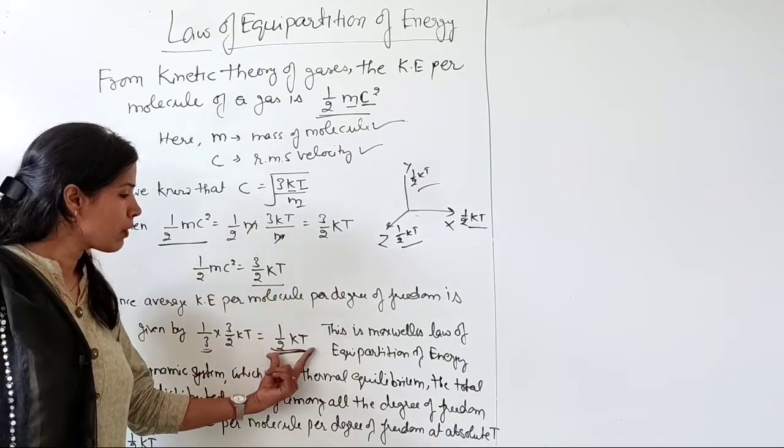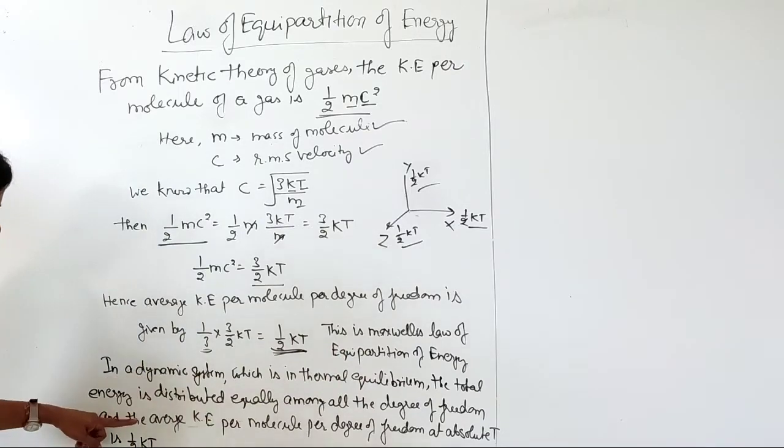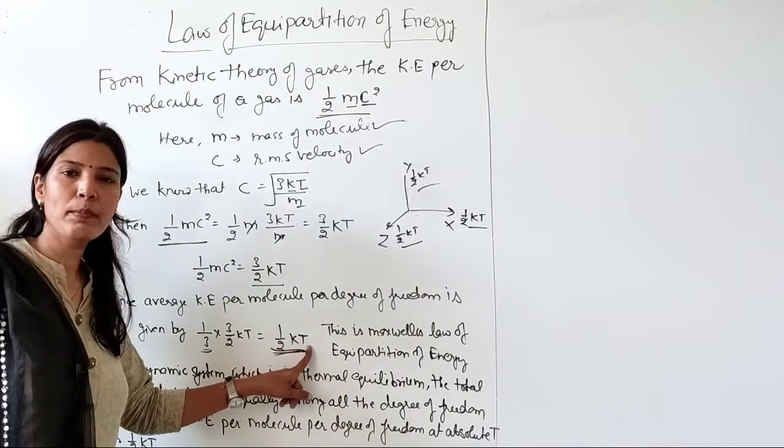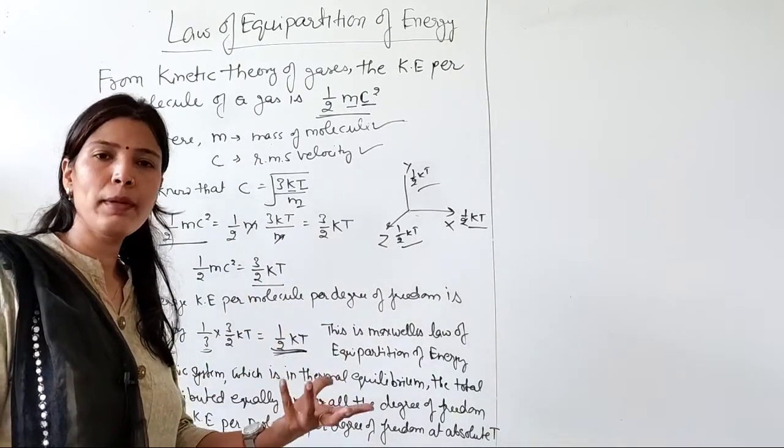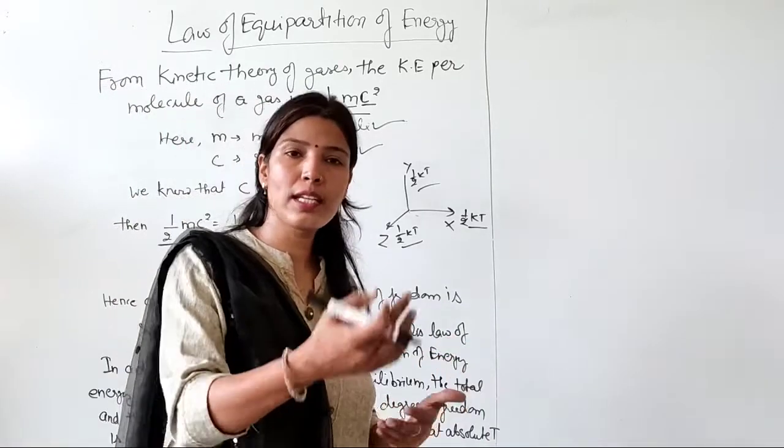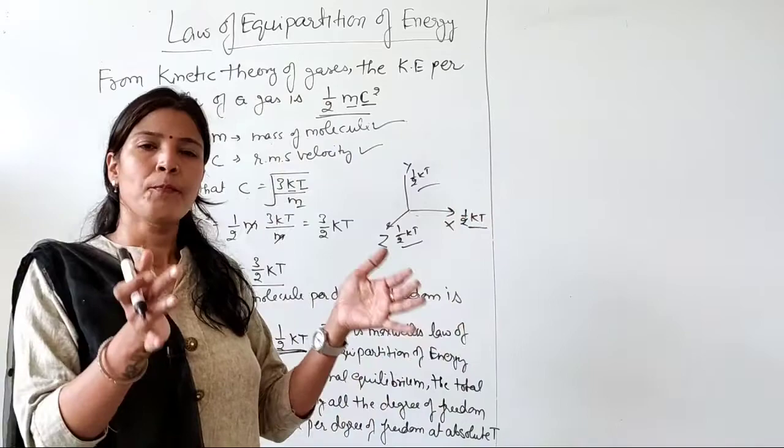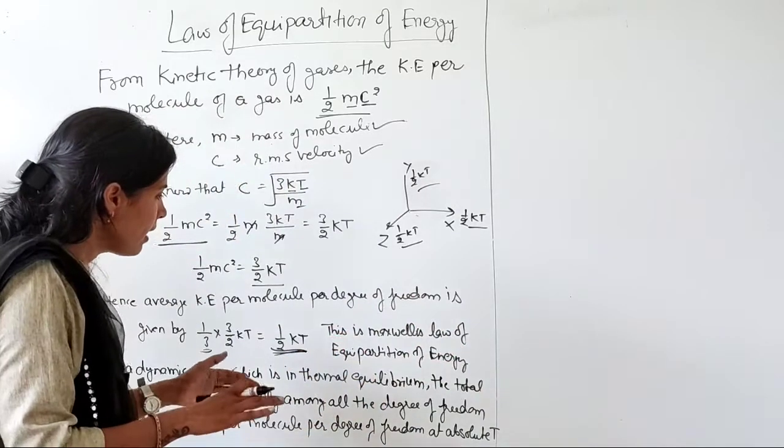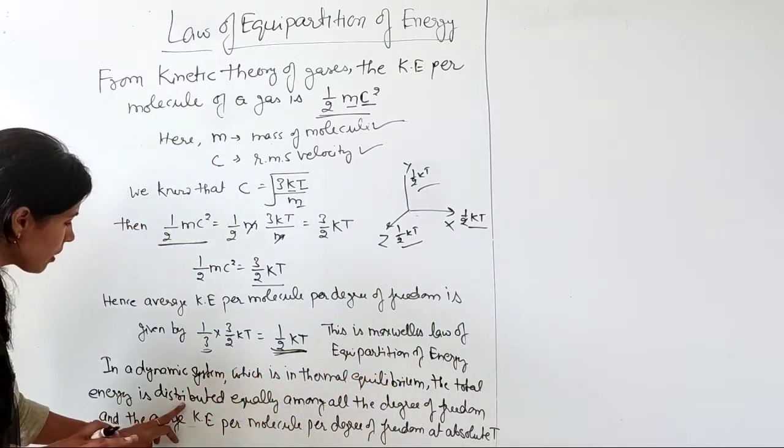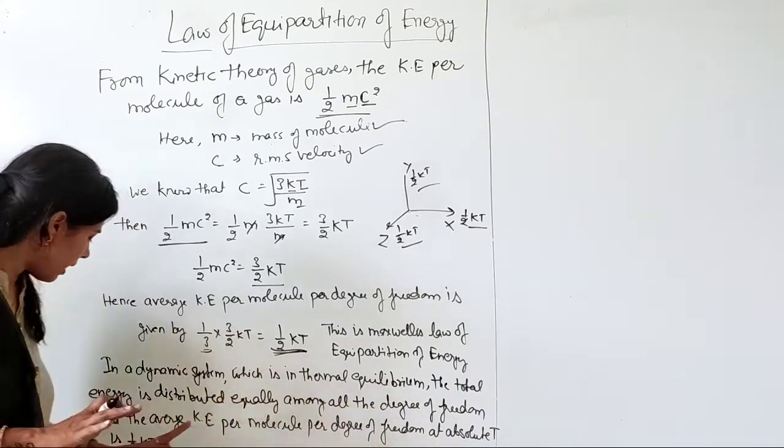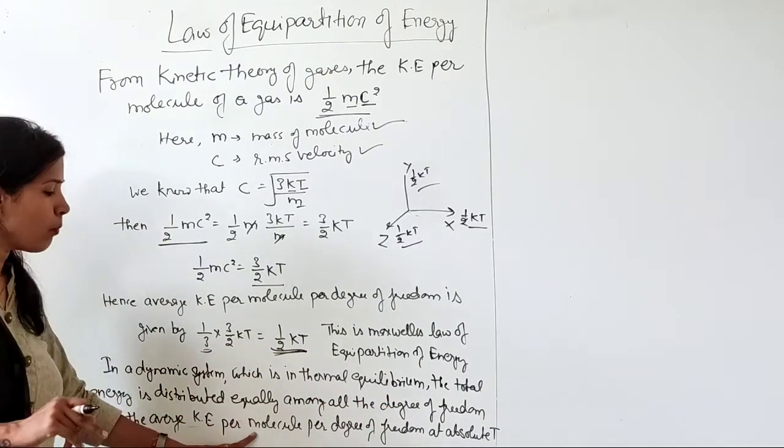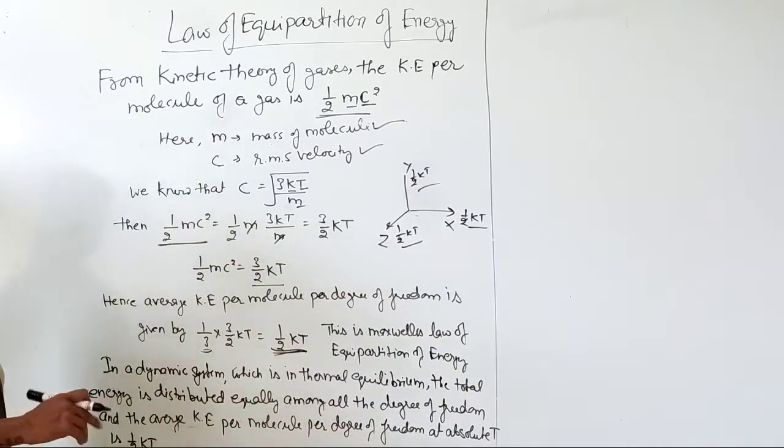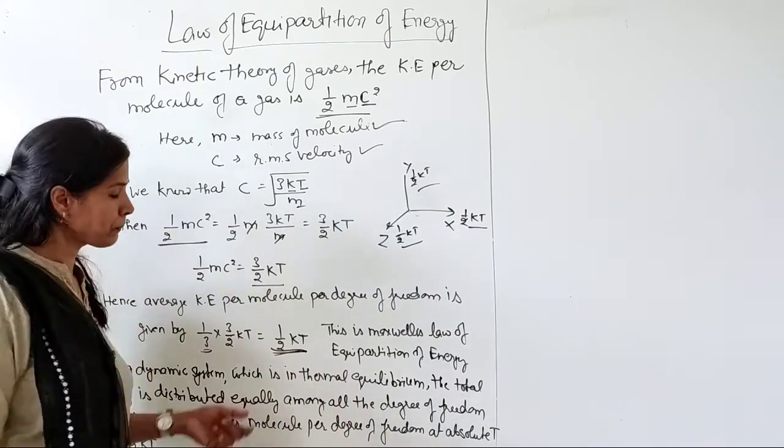Now we can define this law of equipartition of energy for any dynamic system which is in thermal equilibrium, so that temperature remains constant and energy doesn't change. Then the total energy is distributed equally among all the degrees of freedom, and the average kinetic energy per molecule per degree of freedom at absolute temperature T is half kT. So this is your law of equipartition of energy.